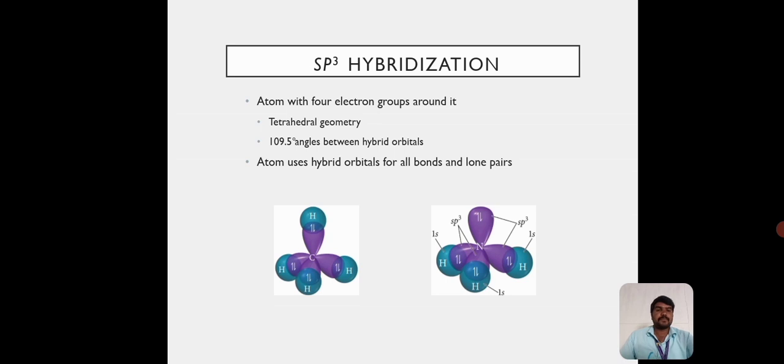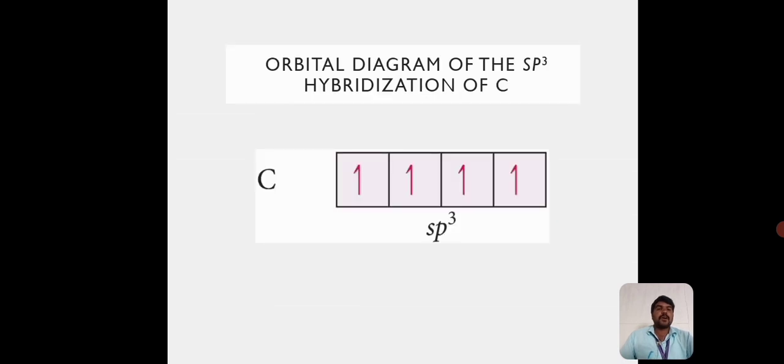Orbital diagram with the sp³ hybridization: Carbon has sp³ hybridization. The first shell is the s, and then three p orbitals, and then the next three shells are the sp³ orbitals.